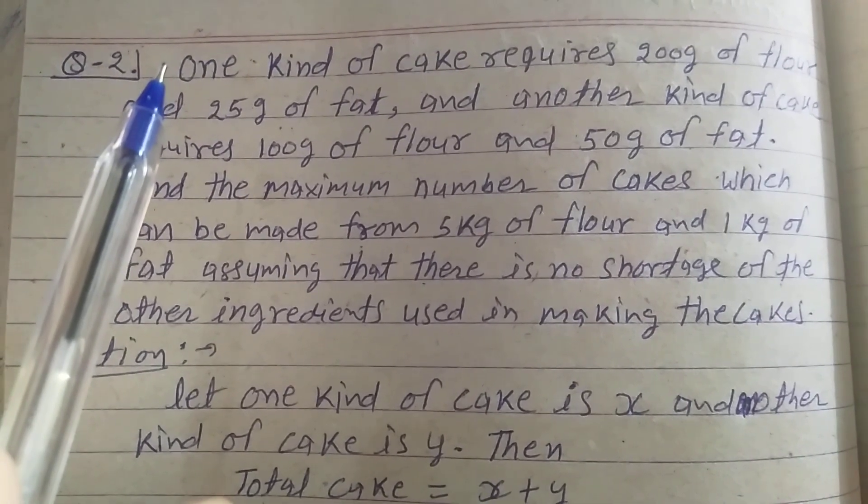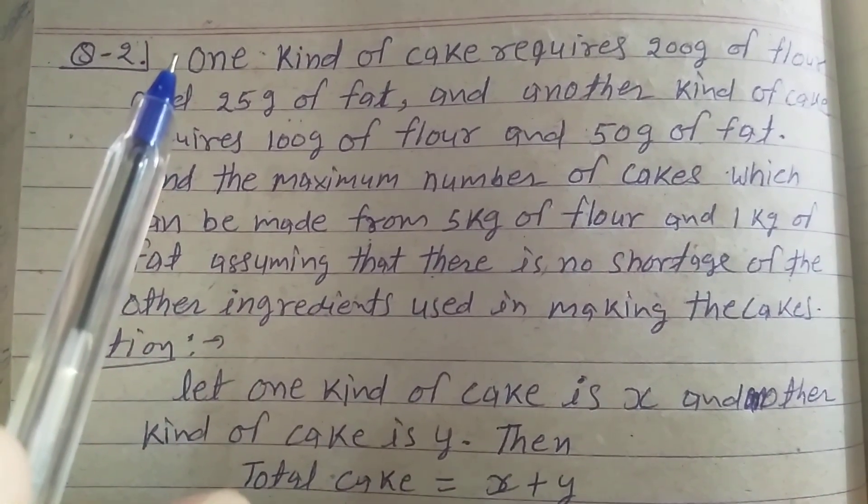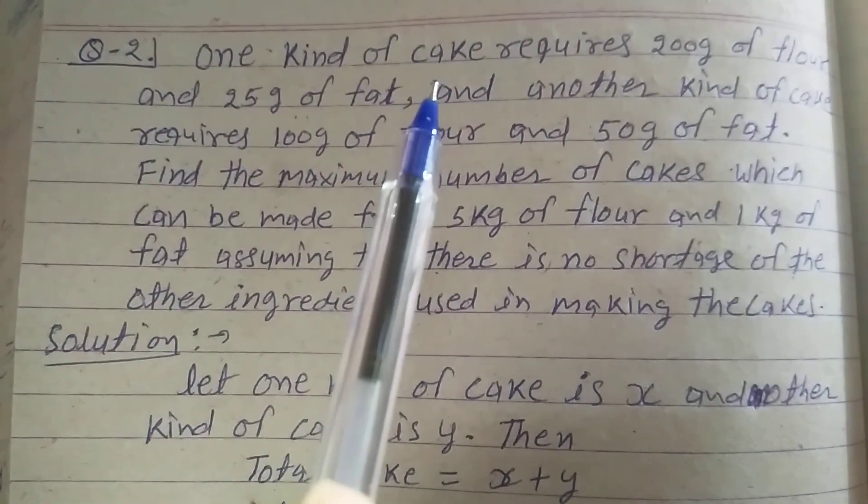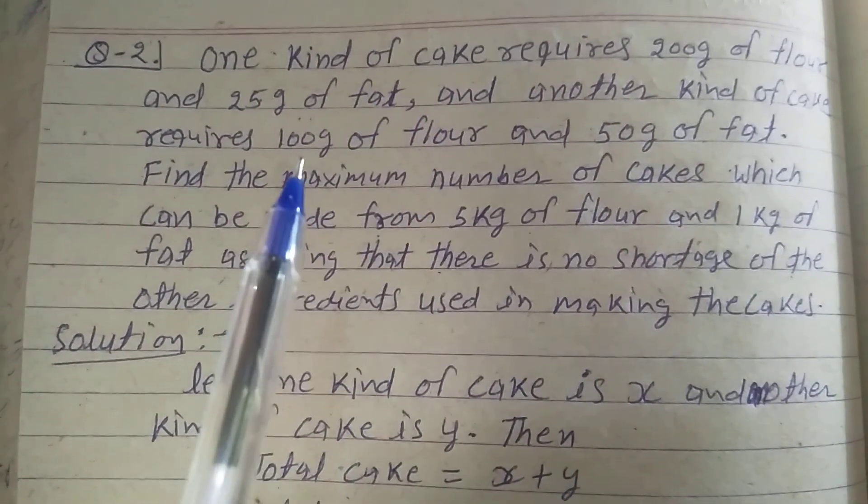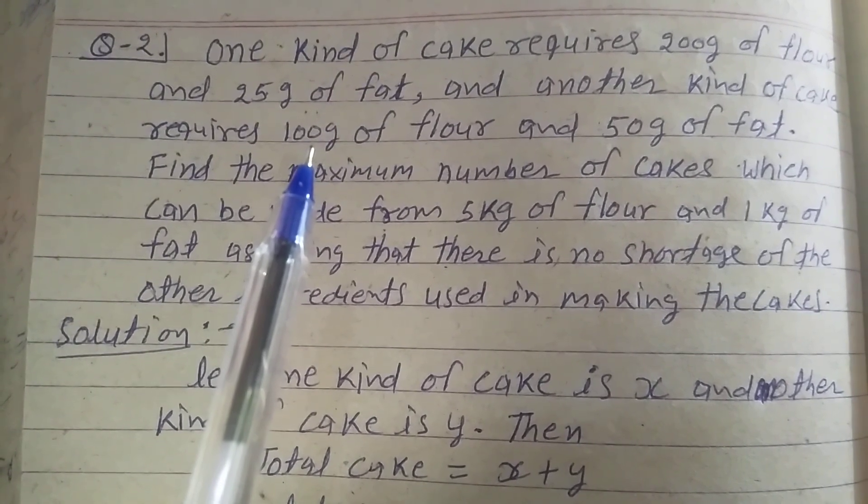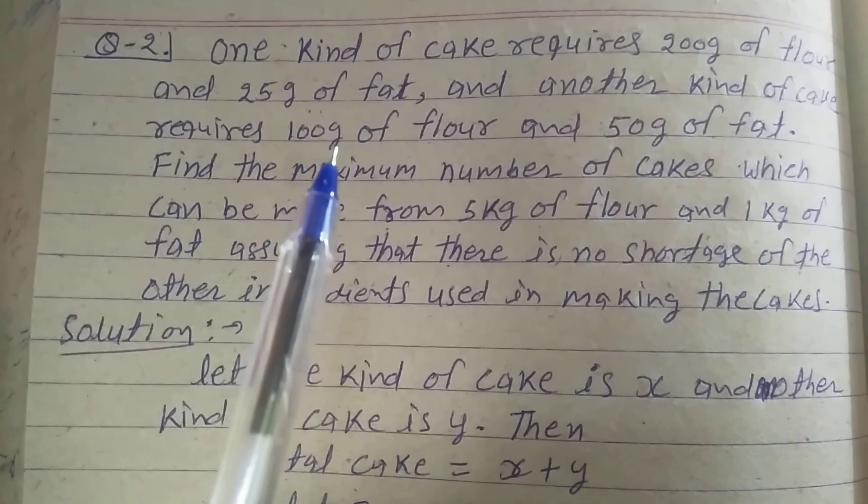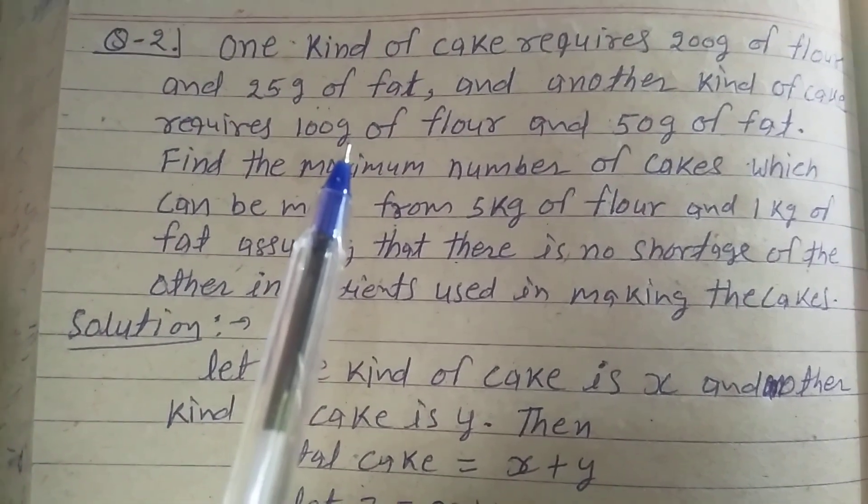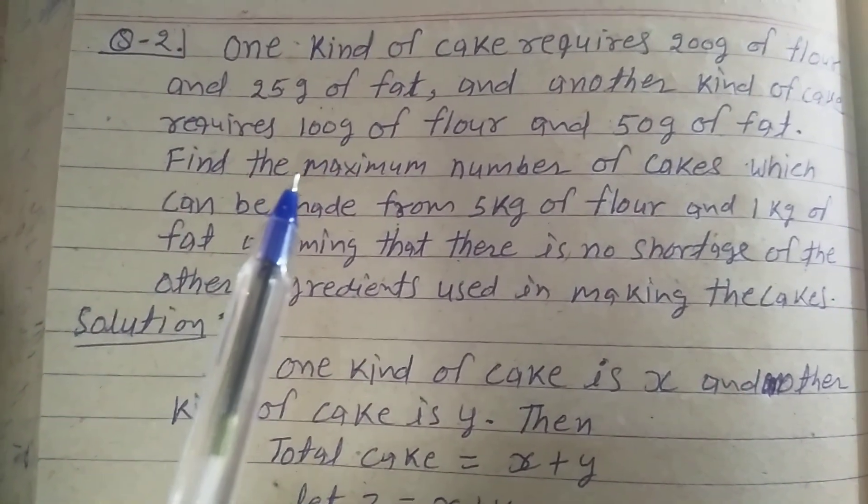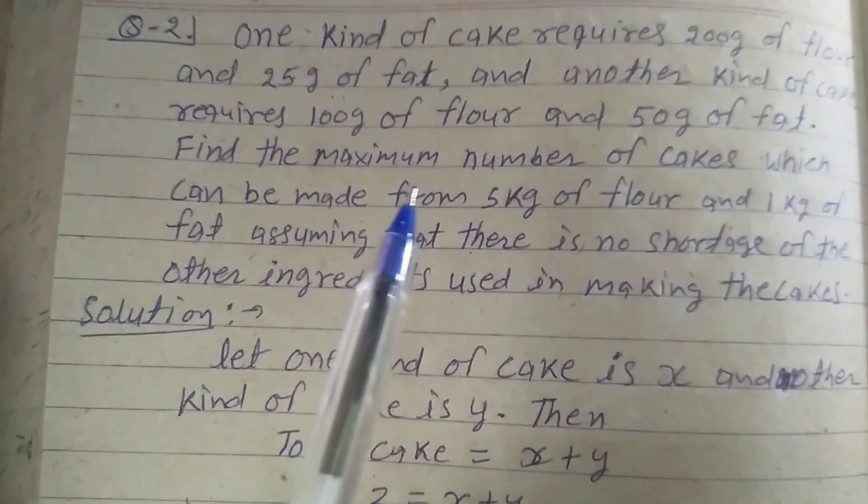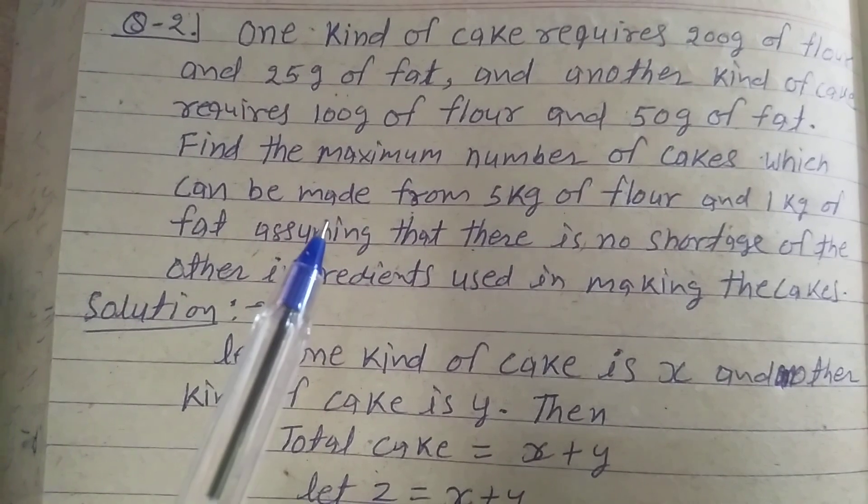I explain the Q2 of exercise 12.2 of class 12th. One kind of cake requires 200 grams of flour and 25 grams of fat, and another kind of cake requires 100 grams of flour and 50 grams of fat.